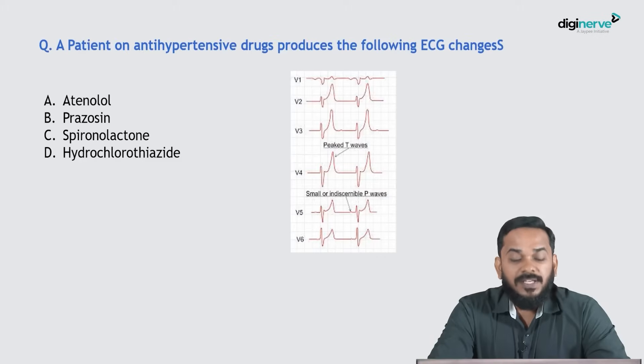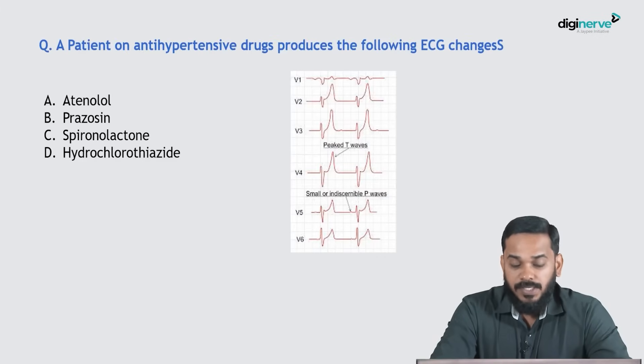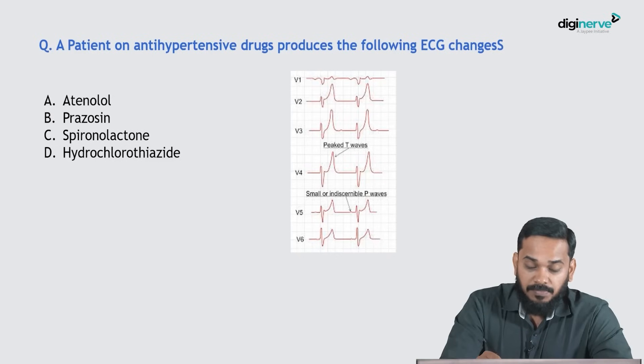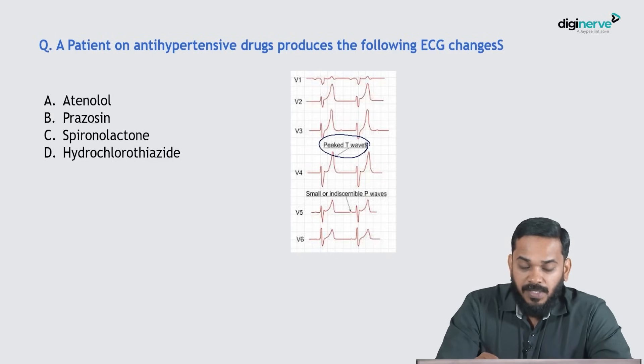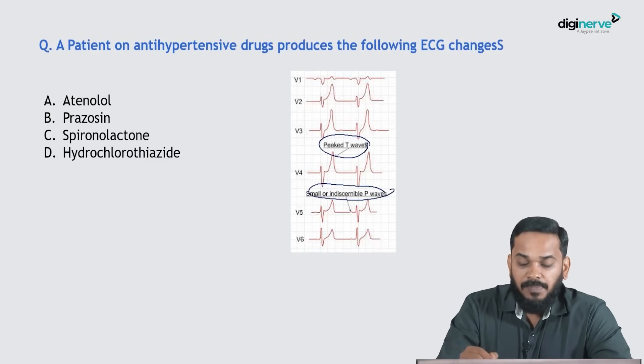Hello guys, in this session we will be discussing pharmacology questions asked in NEET 2023. A patient on an antihypertensive drug has the following ECG changes: peaked T waves and small or indiscernible P waves.